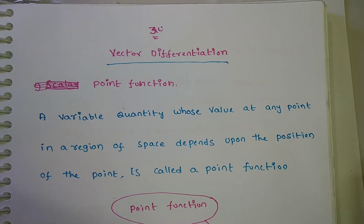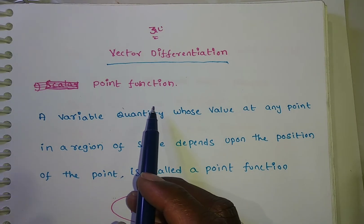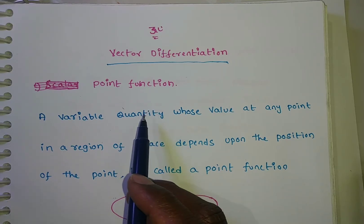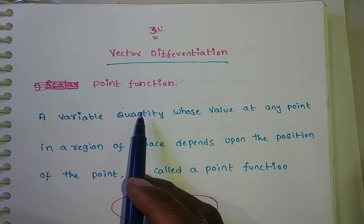If you want to do differentiation, for what will we apply differentiation? Is it for a constant or is it for a function? It is for a function. So for the function we will do the vector differentiation. What type of function? A point function. In vectors, we will do the differentiation for point functions.